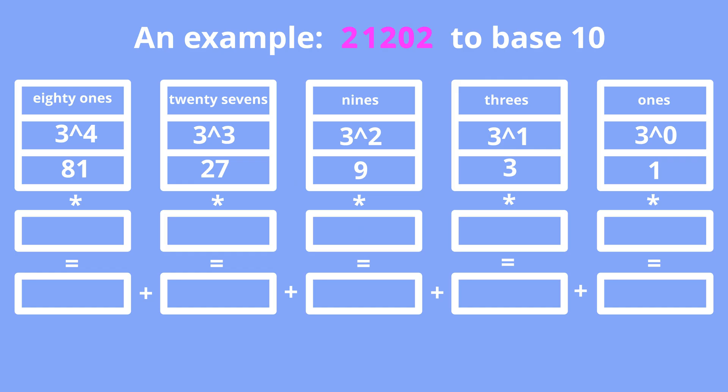Let's for example convert 21202 from the base 3 number system to the base 10 number system. First we arrange from right to left all digits in corresponding positions. Then we multiply digits by the weights of corresponding positions and sum up intermediate results.